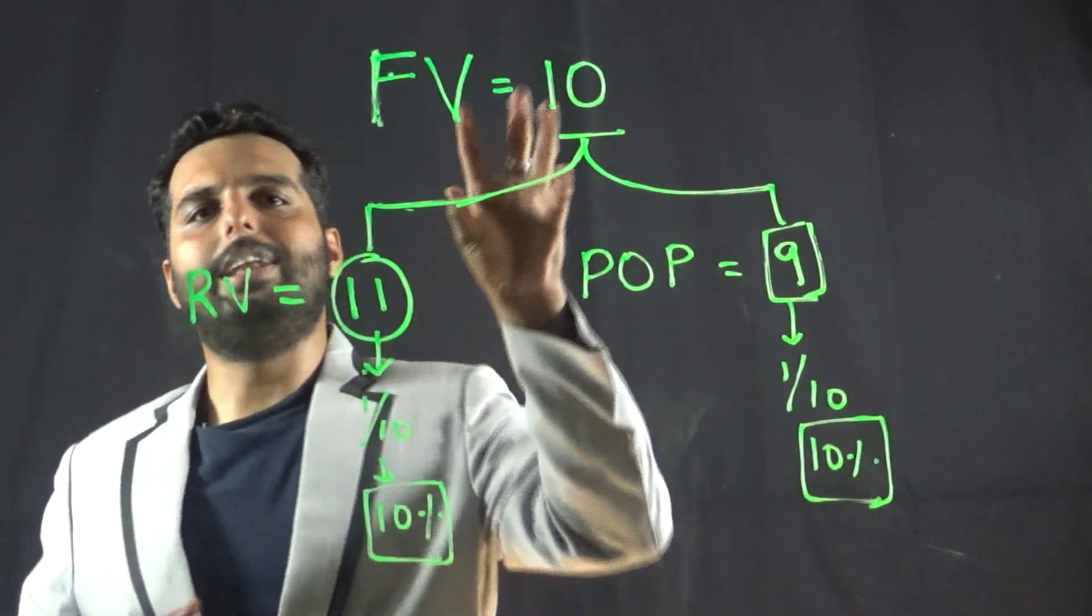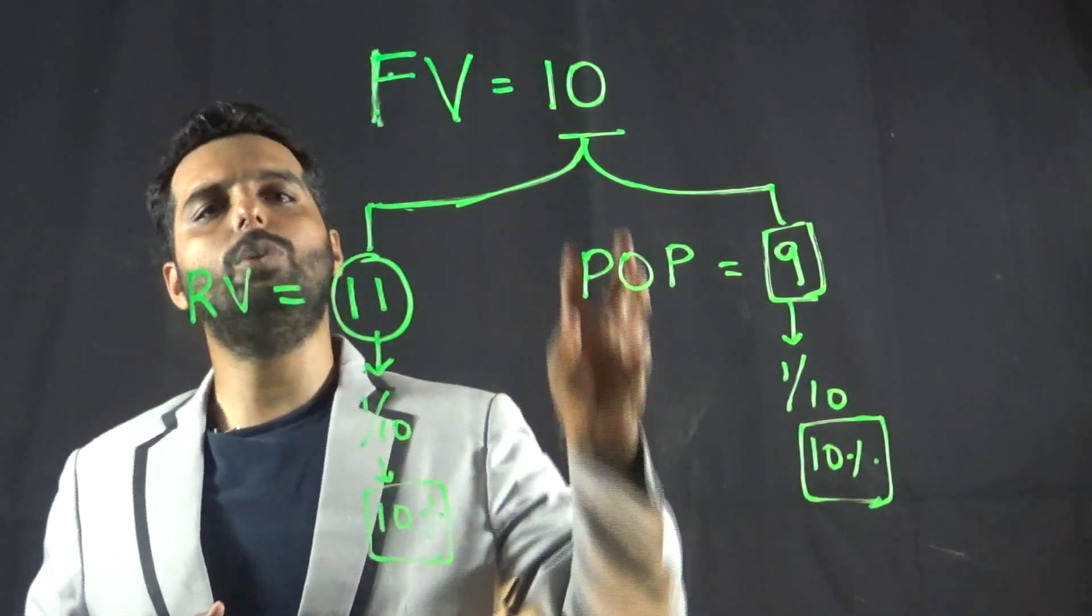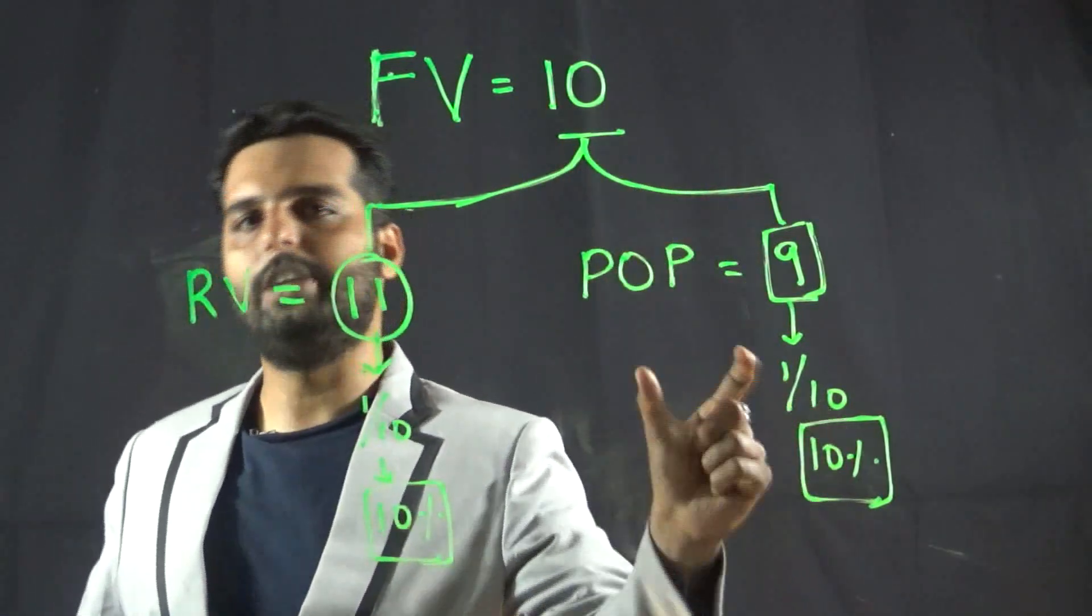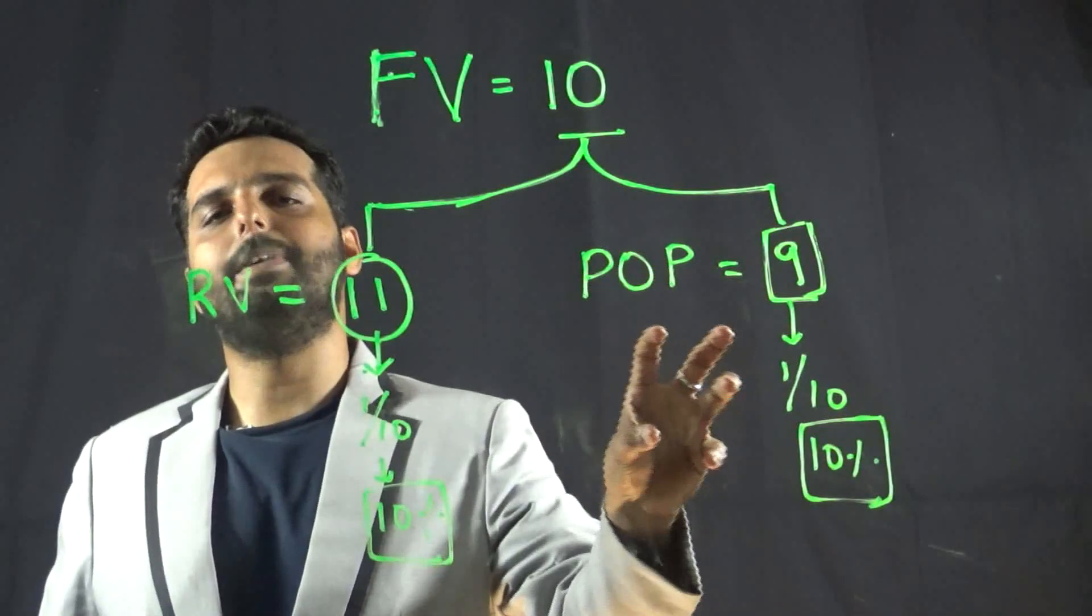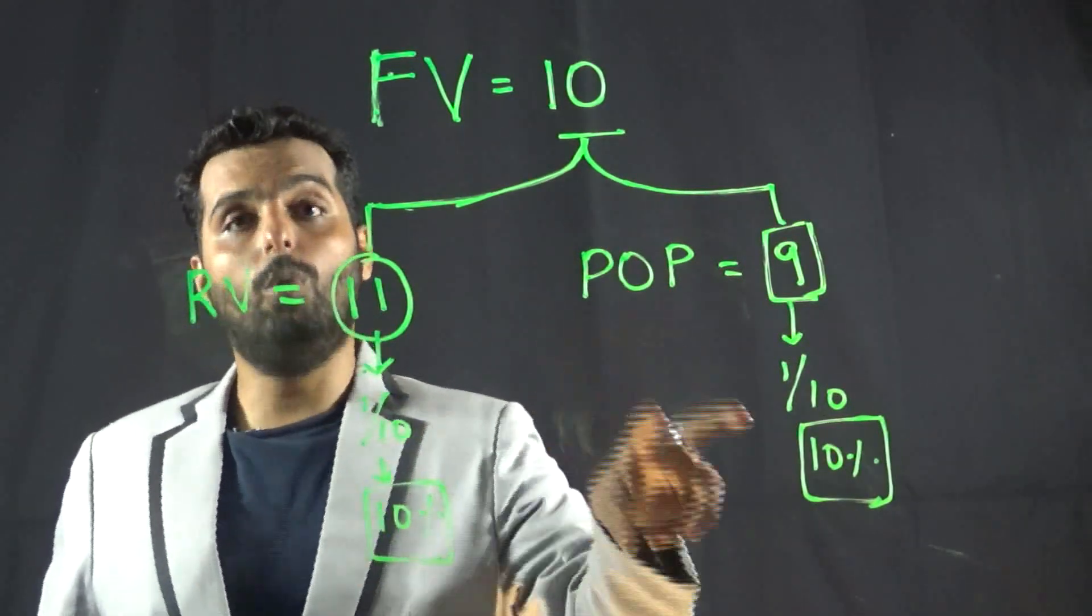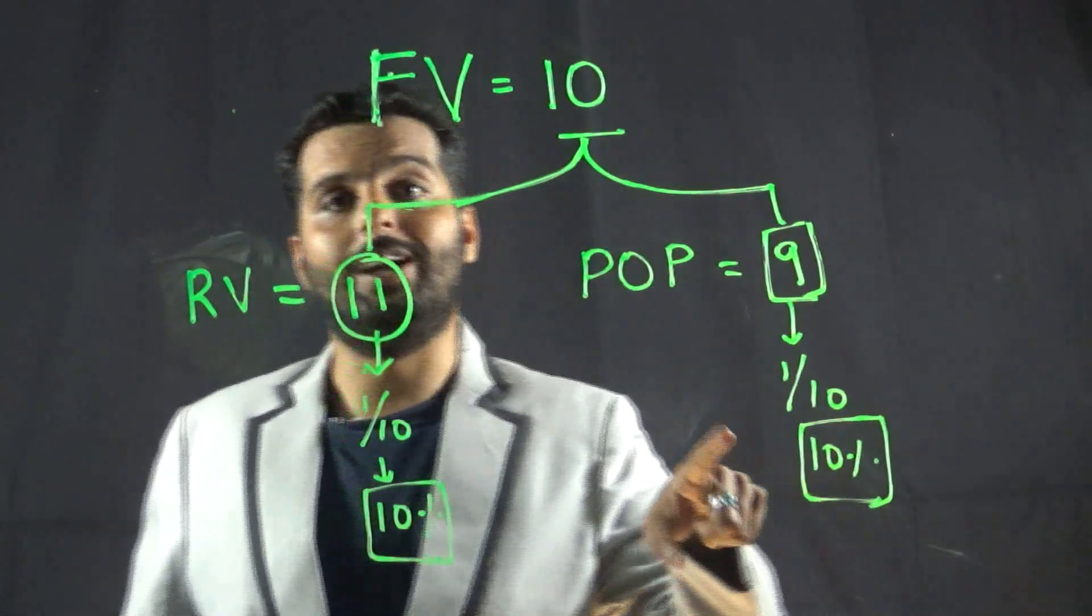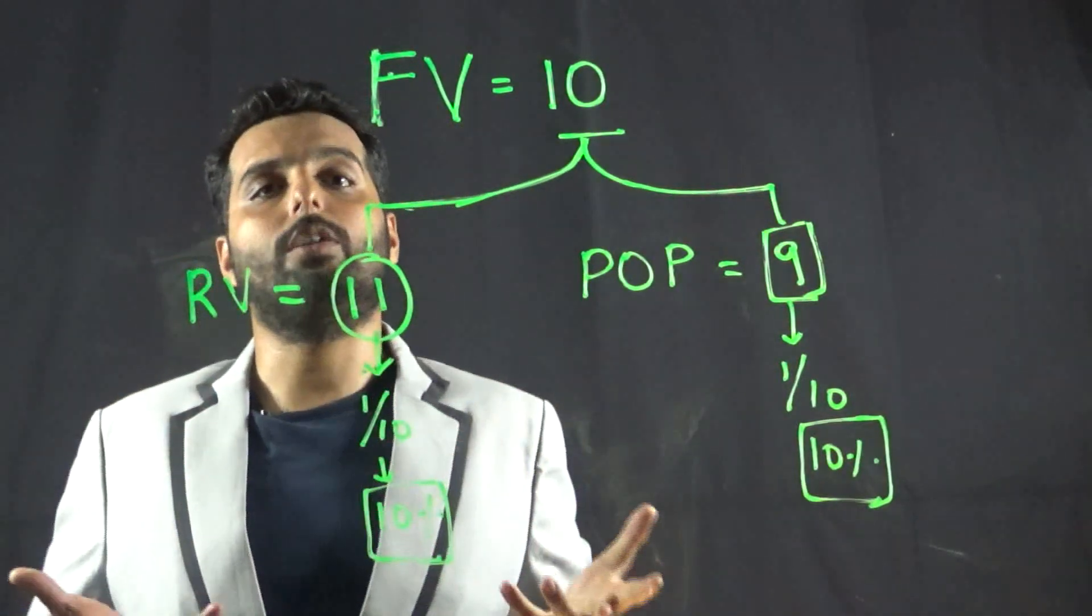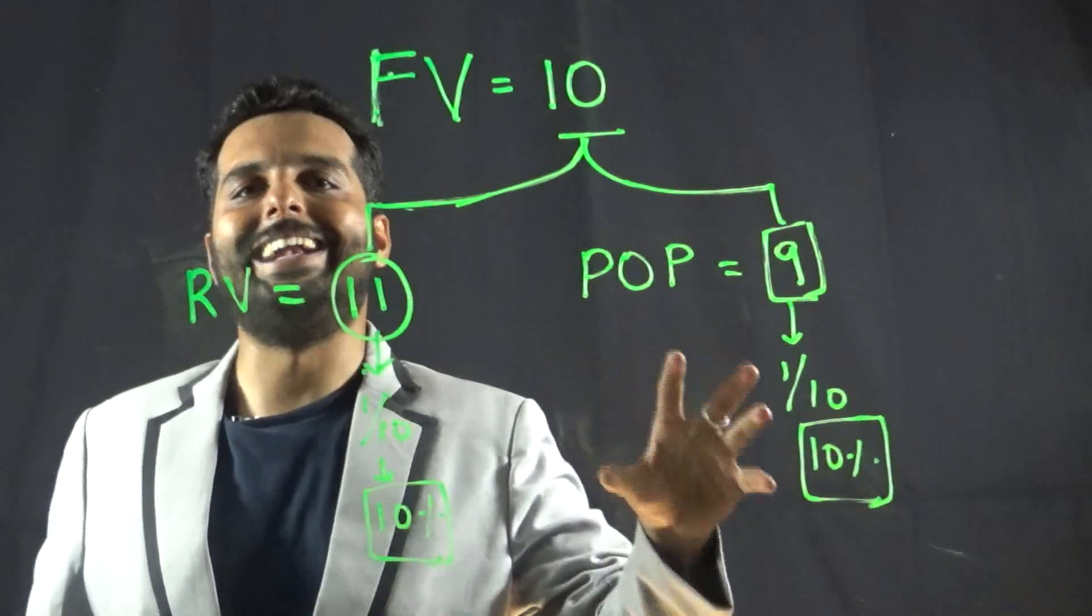Now, the face value is 10. We have issued at a discount of 10%. This 10% loss which is coming at the beginning, or the load coming on the mutual funds in the beginning, is what we call front-end load.